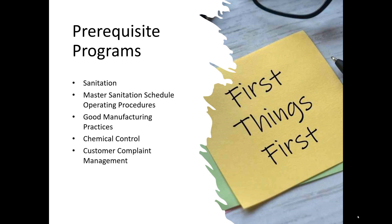And if a customer complains — maybe they find a hazard in their product — how do you manage those complaints? Traceability and recall are fundamental. If you get a complaint about one of your products and you have to do a recall of the other products from that batch, you should have a procedure in place to do so.